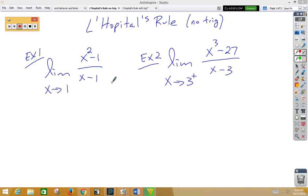So, in example 1, remember, the first thing we always try with a limit is plugging in. So, if we were to plug in a 1 on the top and we were to plug in a 1 on the bottom, we would get 0 over 0. Anytime you have a 0 over 0, L'Hopital's rule applies.